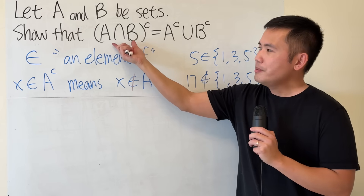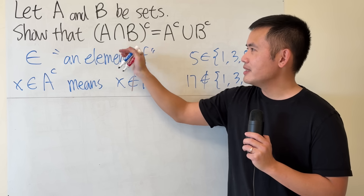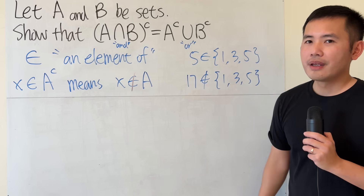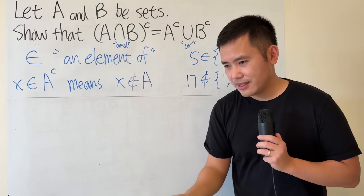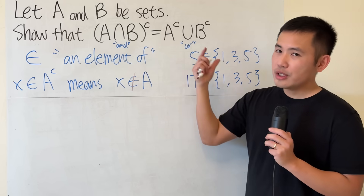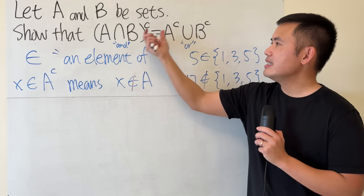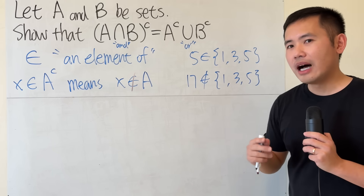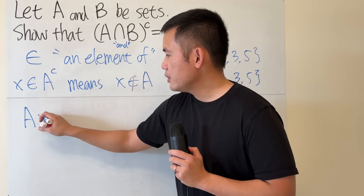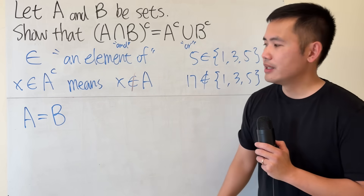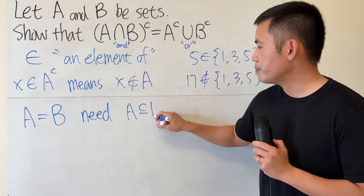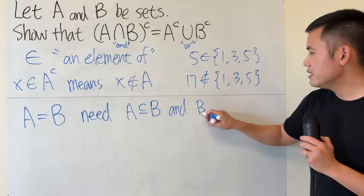So far, so good. Remember, when you have the intersection — this right here — just think about this as 'and', and this right here means 'or'. When you have an intersection of a set, the result is still going to be a set. A complement of a set is still going to be a set. So what we are trying to show is that one set is equal to another. Now, how do we show two sets are equal? Here's the deal. Let's say set A is equal to B — they are both sets. We will have to show A is a subset of B and B is a subset of A.